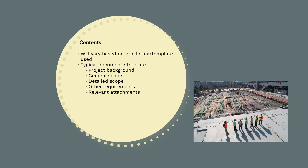The specific contents of a scope of works will vary based on the proforma or template you're using. As mentioned in section 2, during the planning phase we need to develop proforma documents that can simply be filled out. The scope of works proforma document should have the structure and key headings showing what information is required. Typically, a scope of works document will contain the following as a minimum.